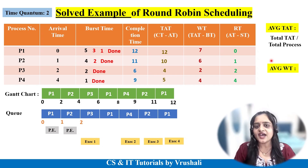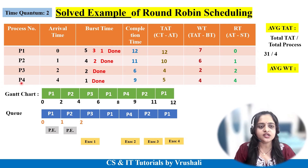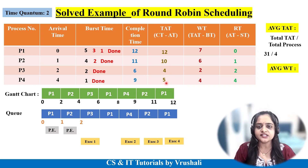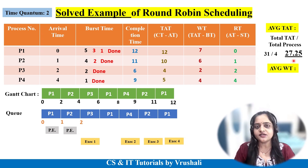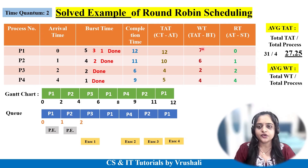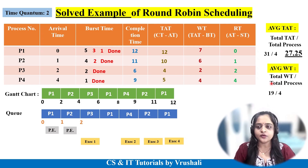To find average turnaround time, the formula is: total of turnaround times divided by total number of processes. So 12 plus 10 plus 4 plus 5 equals 31, divided by 4 processes, giving an average turnaround time of 7.75. For average waiting time: 7 plus 6 plus 2 plus 4 equals 19, divided by 4, giving an average waiting time of 4.75.